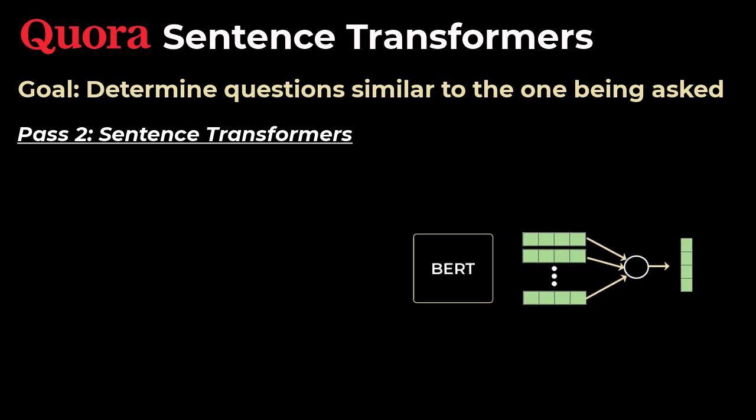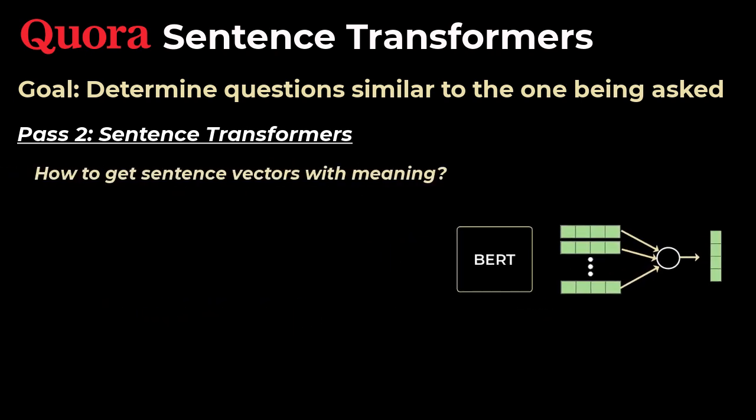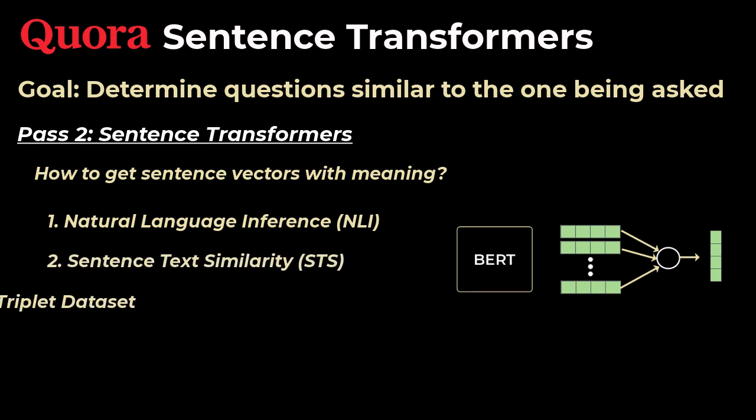Now, in order to have BERT to create sentence vectors that actually have meaning, we need to further train it on sentence level tasks, such as natural language inferencing, sentence text similarity, and something called the triplet data set. We'll talk about each of them in the next pass. But just know that once we train BERT on any or all of these tasks, this sentence vector becomes a good representation of the sentence.